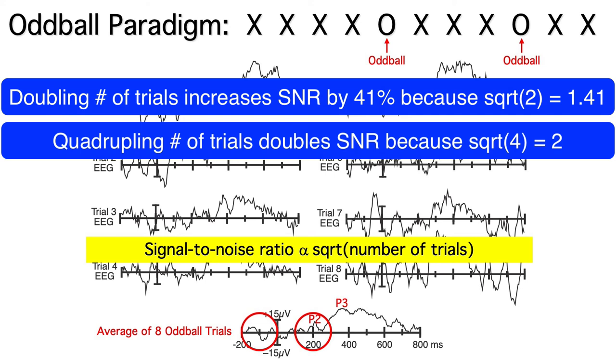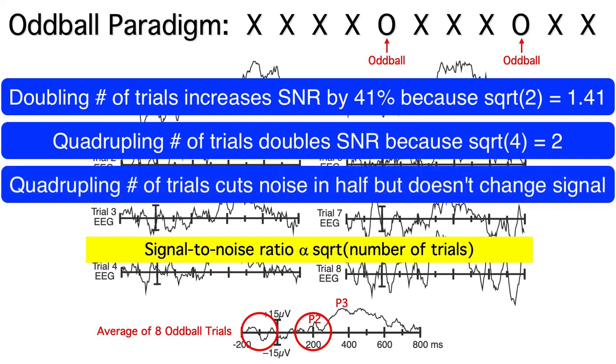Increasing the number of trials doesn't change the signal, it just decreases the noise. So if we quadruple the number of trials to double the SNR, this would effectively cut the noise in half.